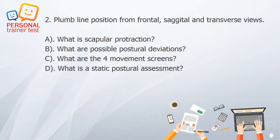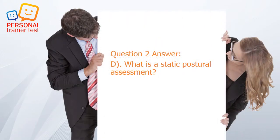Question 2. A. What is scapular protraction? B. What are possible postural deviations? C. What are the forearm movement screens? D. What is a static postural assessment? Answer: D. A static postural assessment uses a plumb line from frontal, sagittal, and transverse views.